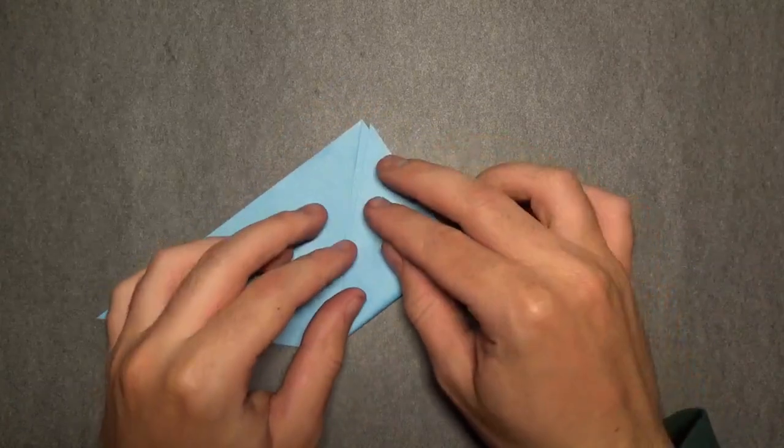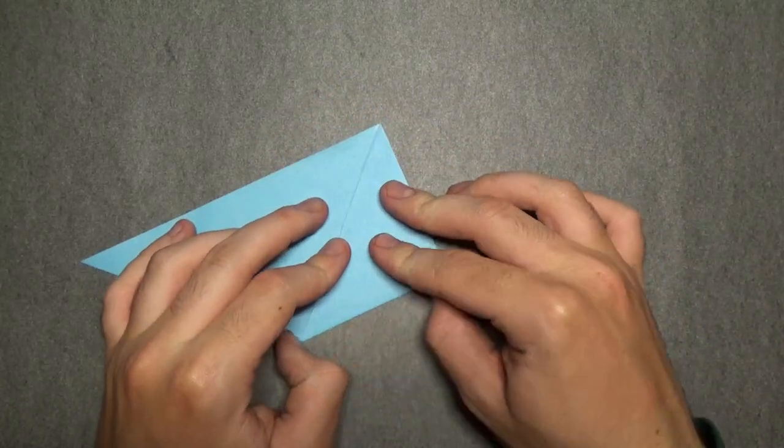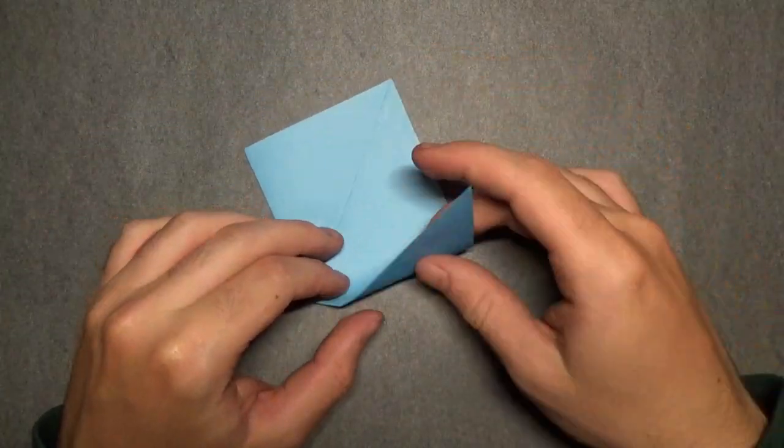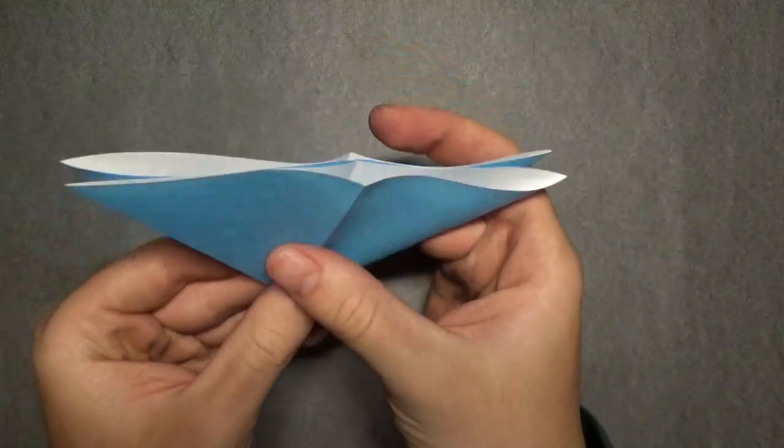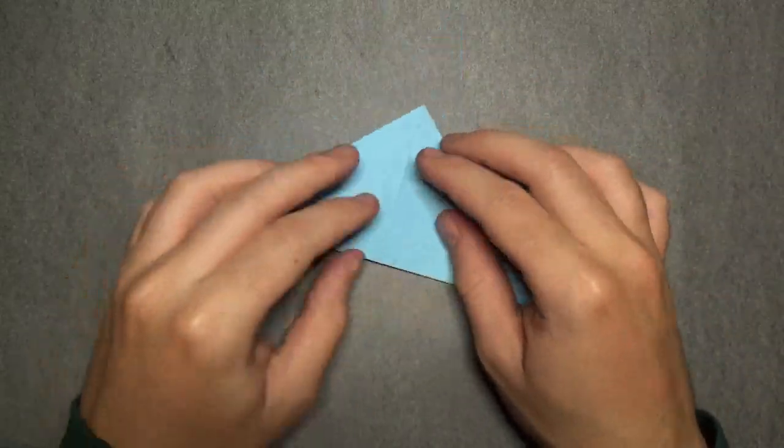Okay. And fold up to the top. Okay, turn over, and fold this point to here. And open the pocket, and bring the sides together, and flatten. And there's the water bomb base.